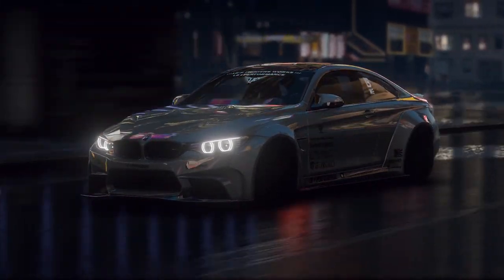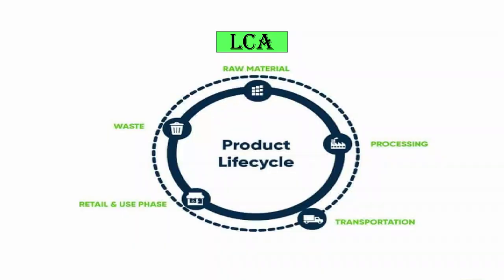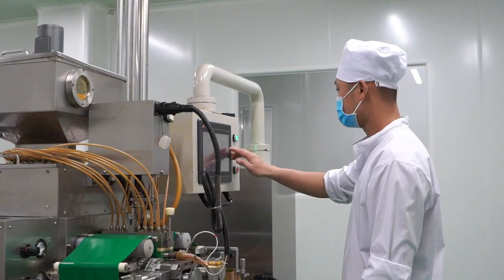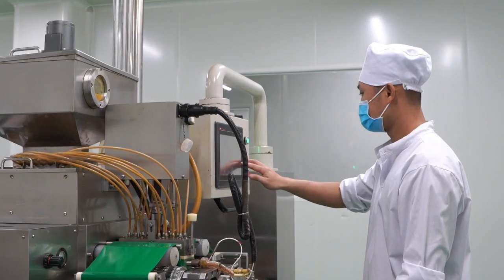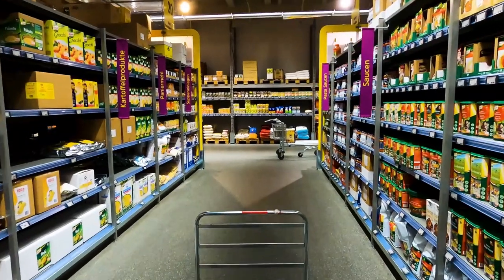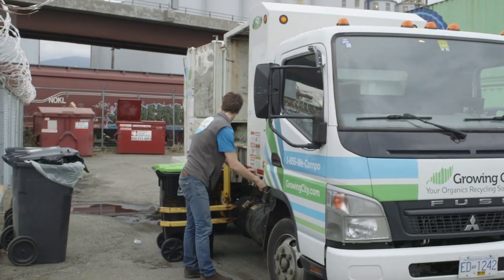Five Steps of a Product Life Cycle, From Cradle to Grave. Generally, the product life cycle consists of five phases: 1. Raw material extraction, 2. Manufacturing and processing, 3. Transportation, 4. Usage and retail, 5. Waste disposal.